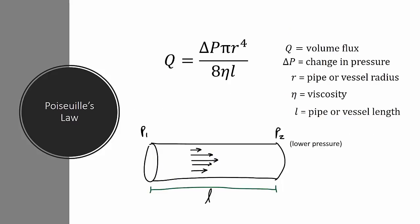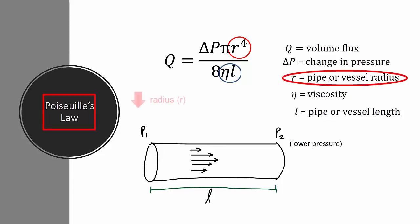Flow through a rigid tube can also be described by the actual characteristics of the tube and the material flowing through it. This is described by Poiseuille's Law: flow across the tube is determined by the radius to the fourth power and is inversely proportional to the viscosity of the fluid and the length of the tube. What I really want to stress is how important the radius is — a simple decrease in radius will result in significant decreases in flow through that same tubing.